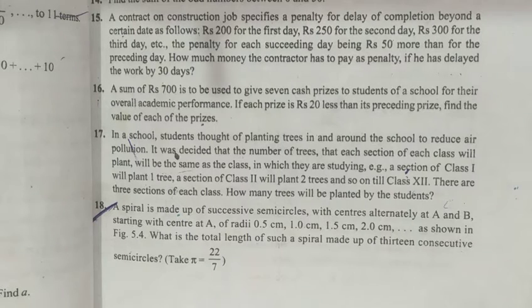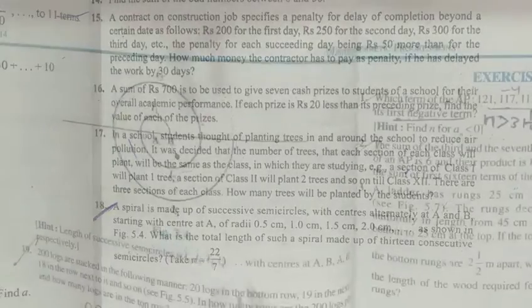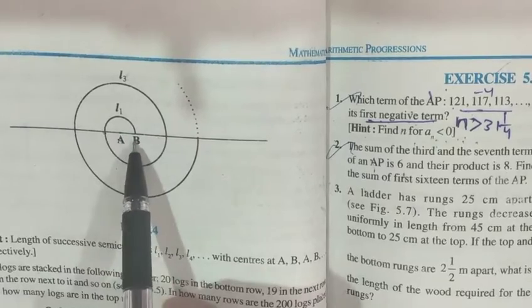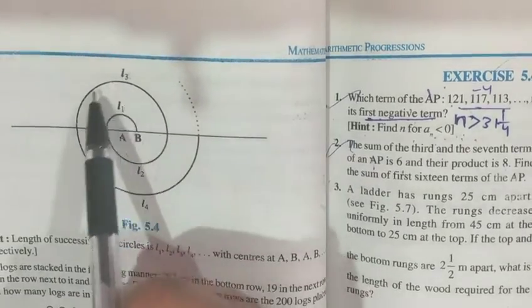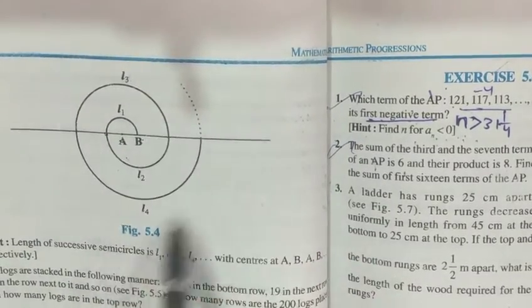Circumference formula is 2πr, and but it's a semicircle, so 2πr upon 2, it becomes half, so 2 will cancel, it becomes πr. One semicircle is made at A, second semicircle at B, third semicircle at A, fourth at B, and so on, up to 13.